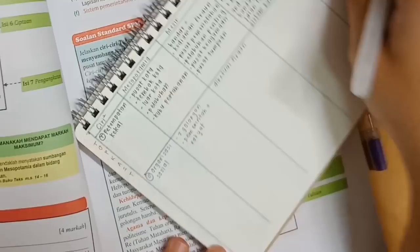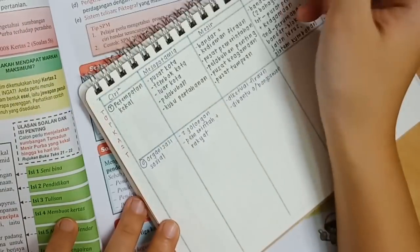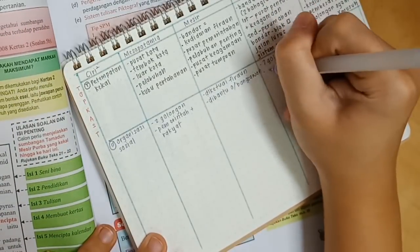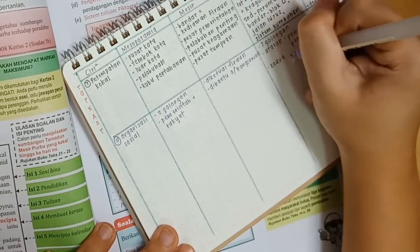When taking my notes, I like to use the shortest way possible. So as you can see under Organisasi Social for Mesopotamia, instead of writing Dan or whatever, I just write a plus.